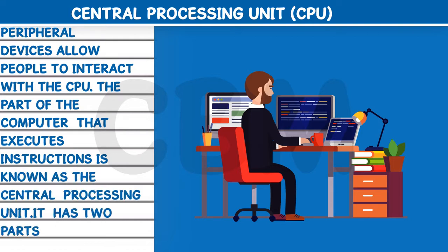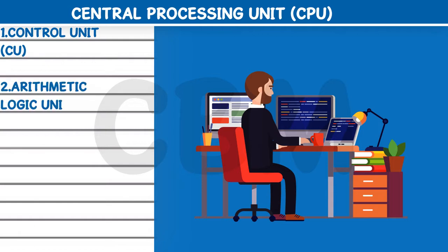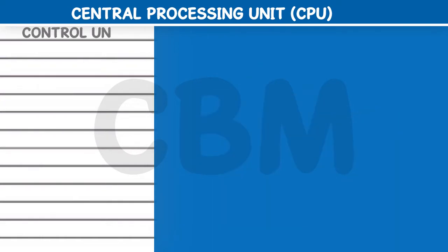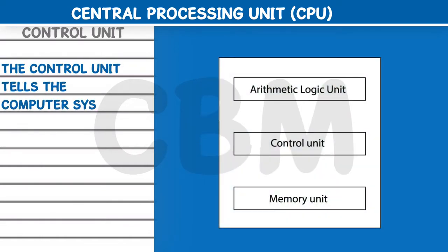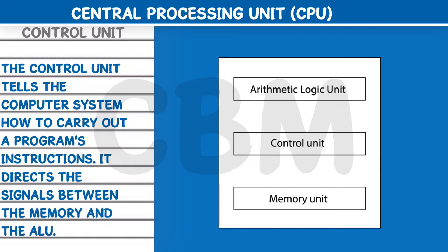The CPU has two parts: first, the control unit; second, the arithmetic logic unit. The control unit tells the computer system how to carry out a program's instructions. It directs the signals between the memory and the ALU.